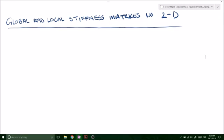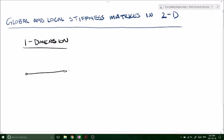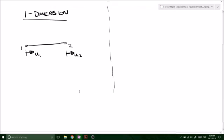YouTube, what's up? So today we're going to be looking at the global and local stiffness matrices in two dimensions. If you remember previously we were looking at the global and local stiffness matrices in one dimension, right, where it is just along the movement on the x-axis.